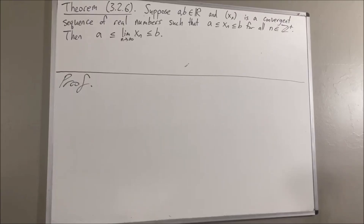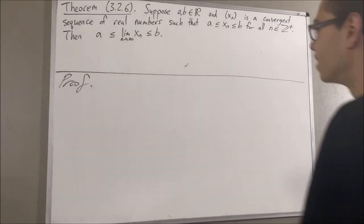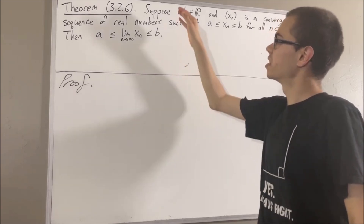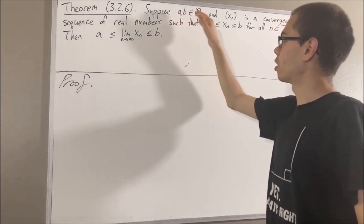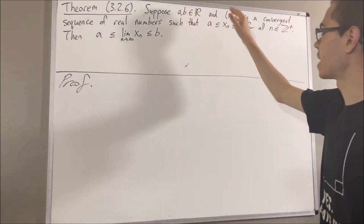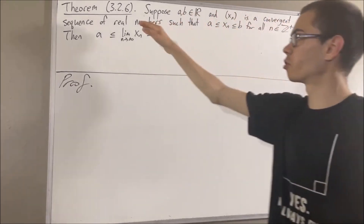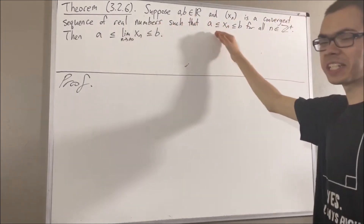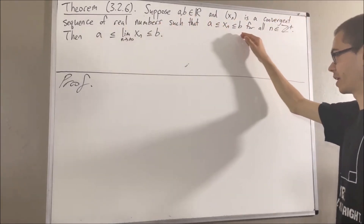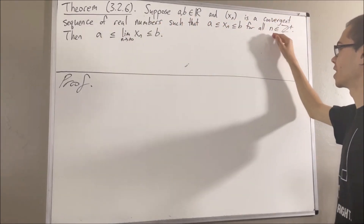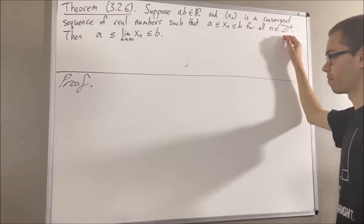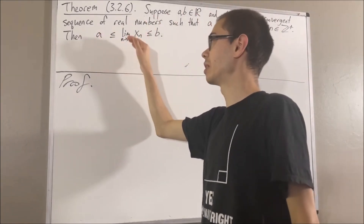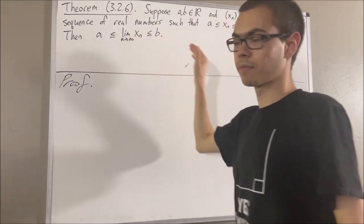Hello! In this video, we are going to prove the following theorem. Suppose a and b are real numbers, and xn is a convergent sequence of real numbers, such that a is less than or equal to xn is less than or equal to b, for all positive integers n. Then, a is less than or equal to the limit of xn, which is less than or equal to b.